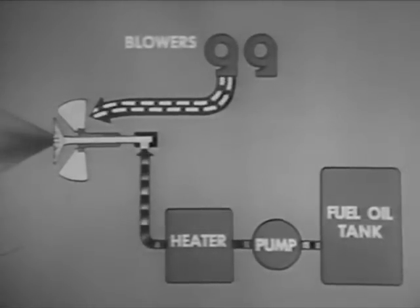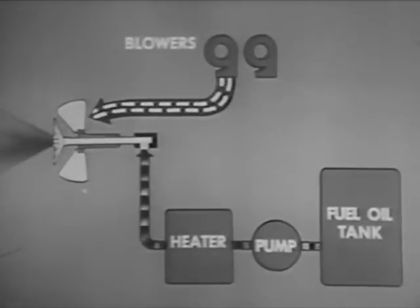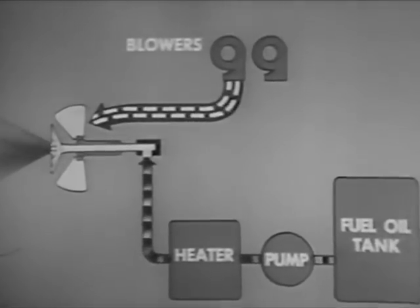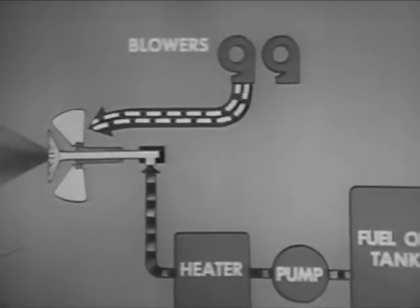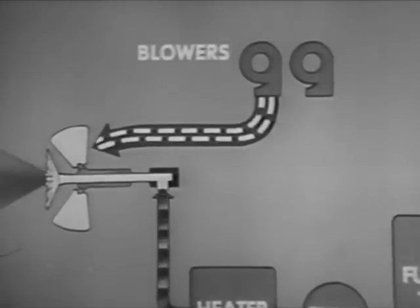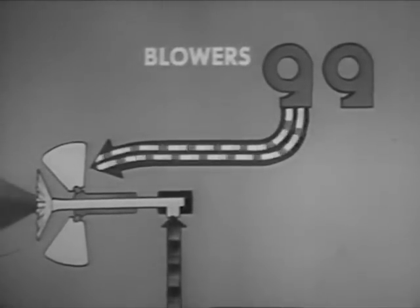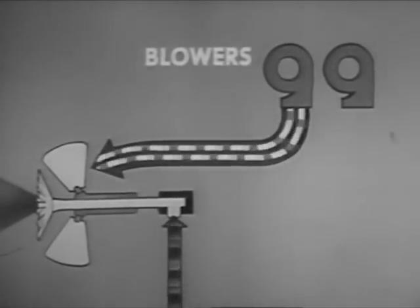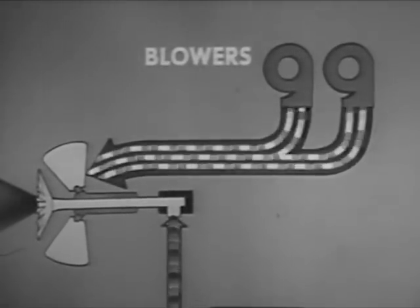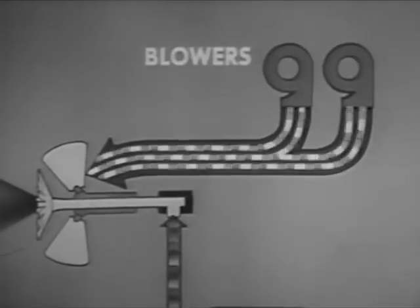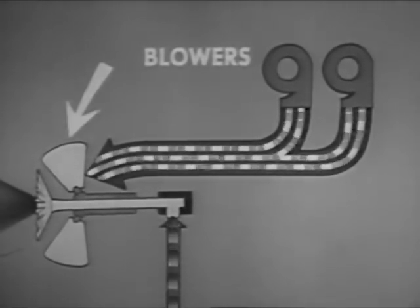Controlling the forced draft blowers is the principal method of controlling the quantity of air reaching the burner. For example, to increase the air a moderate amount, you increase the speed of the blower in service, or if even more air is needed, you cut in another blower. You can make minor adjustments in the air supply with the air doors.